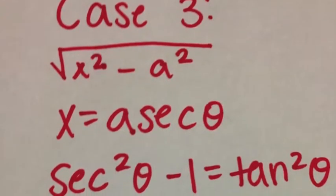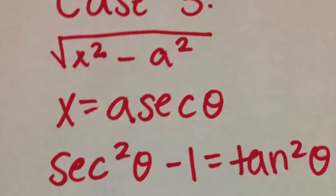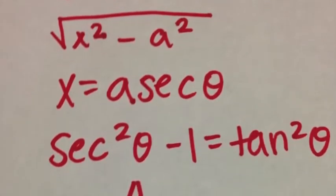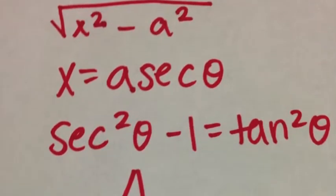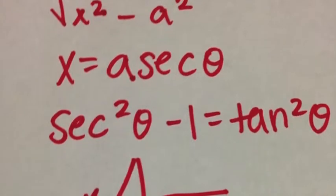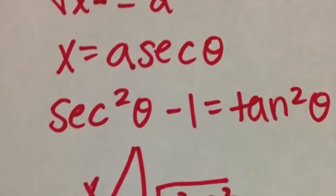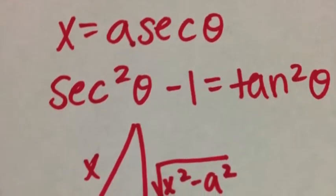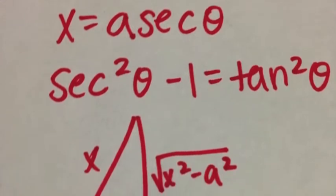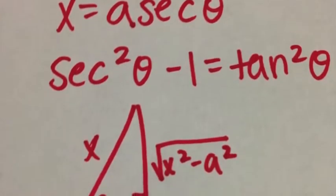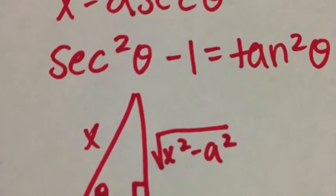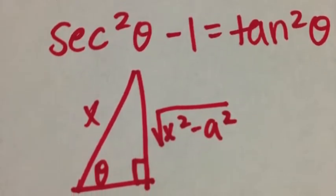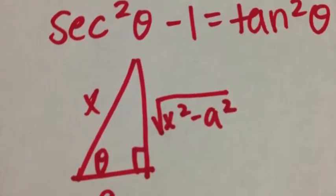In Case 3, we're going to once again have a radical, but this time the variable is going to be subtracting the integer. For this one, we're going to plug in a secant theta for x. To refresh your memory, secant squared theta minus 1 equals tangent squared theta. Once we start solving, you'll start to understand why I'm reminding you of these formulas. Here is a right triangle involving secant.